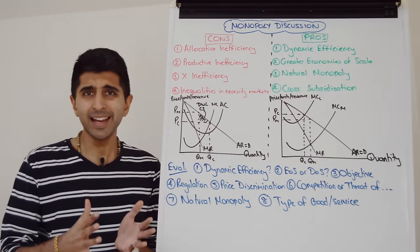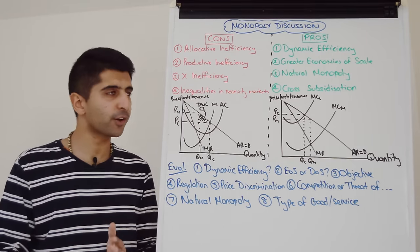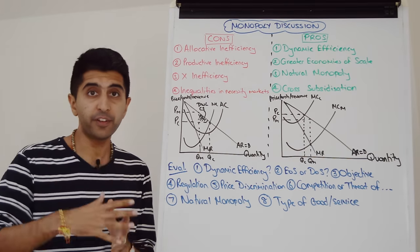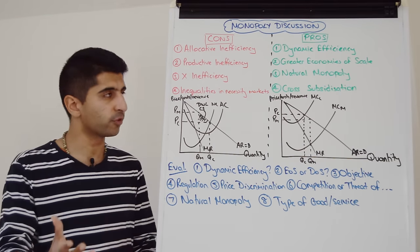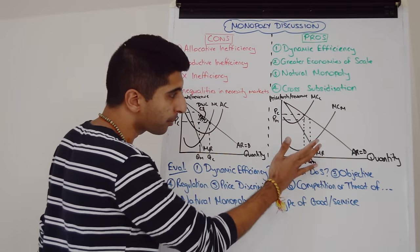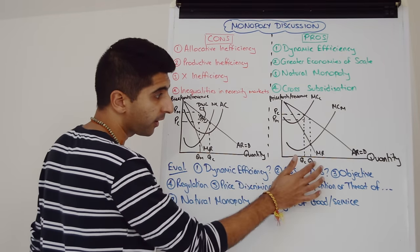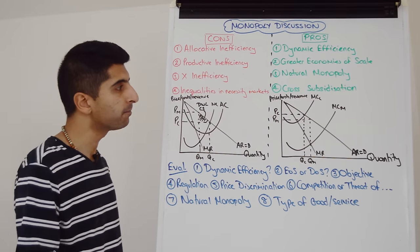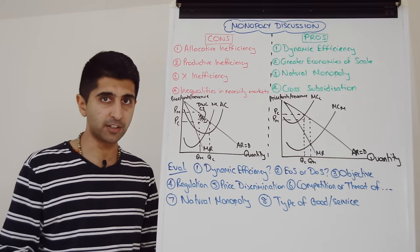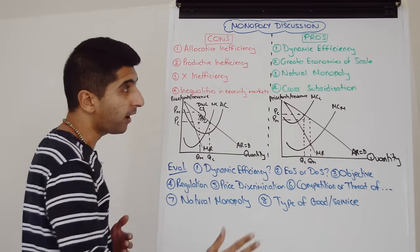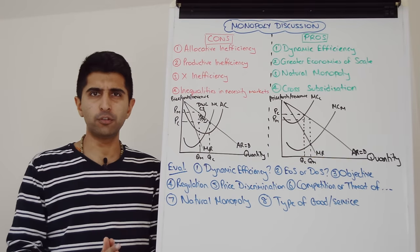In certain markets, that is absolutely true. Greater economies of scale potential if the firm is bigger than if the firms were smaller. And as a result, a profit maximizing monopolist using this diagram is charging a lower price and producing a higher quantity than a competitive firm being allocatively efficient. So number two is a great argument to make in certain industries.